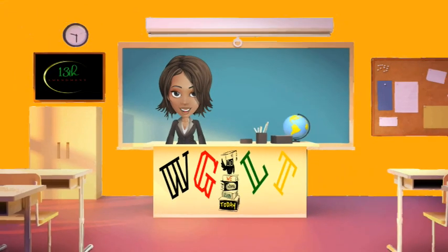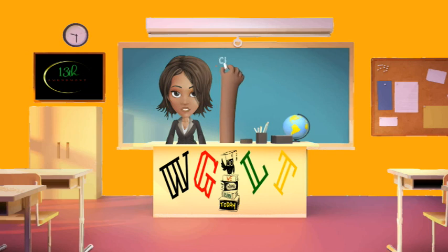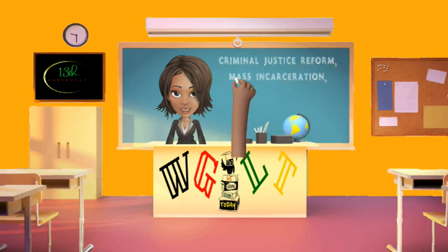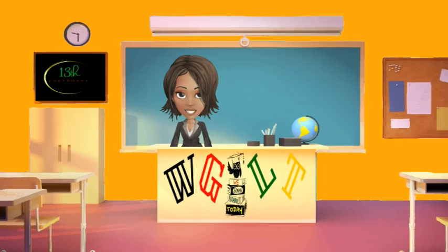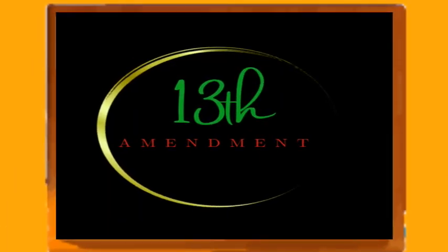This loophole perpetuated a cycle of exploitation and oppression, particularly targeting Black Americans who were disproportionately subjected to arrest and imprisonment. Over time, this injustice was addressed through further legal battles and societal shifts, but its legacy still resonates in discussions about criminal justice reform, mass incarceration, and systemic racism. The 13th Amendment serves as a complex, multi-faceted symbol of progress, highlighting both the triumphs in dismantling institutionalized slavery and the ongoing challenges in achieving full equality and justice for all.